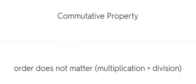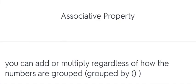Commutative property: order does not matter. Associative property: you can add or multiply regardless of how the numbers are grouped.